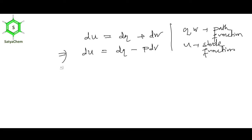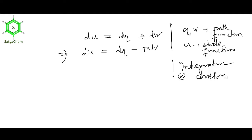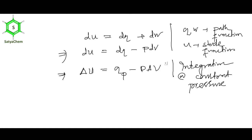Now we are going to integrate at constant pressure. When you integrate dU, you get delta U. But when you integrate dq, you get q — the absolute value — not delta q. Delta q is completely invalid. Delta U means U2 minus U1, the difference between final and initial states.